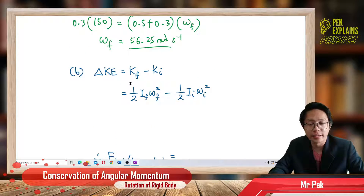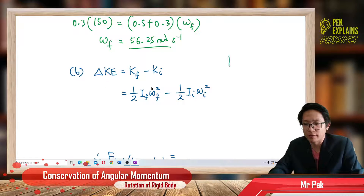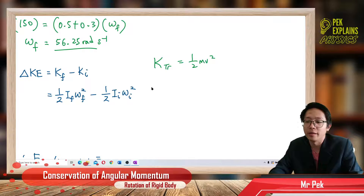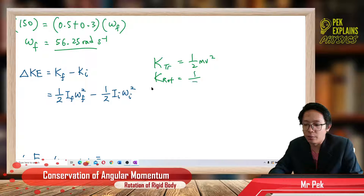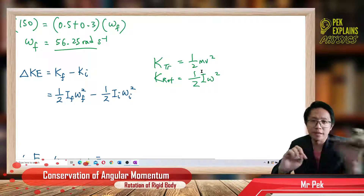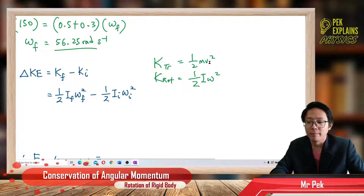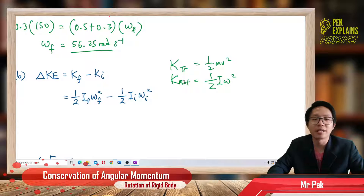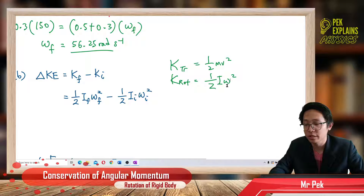We use final kinetic energy minus initial kinetic energy to find the change. We have translational kinetic energy which is half mv squared, and for rotational motion, mass is like I and v is like omega, so rotational kinetic energy is half I omega squared. When something rotates, it has rotational kinetic energy equal to half I omega squared, given the moment of inertia and the angular velocity.